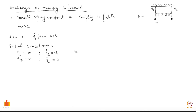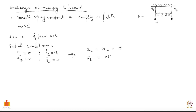This translates to the following for the normal coordinates. The same initial conditions, if you look for the normal coordinates, they translate to: capital Q1 equals capital Q2 equals 0 at t equal to 0, just because small q1 and small q2 are 0 and capital Q1 and capital Q2 are linear combinations. You can also immediately see that Q1 dot will be sqrt(mL²/2) times v0, and Q2 dot will also be sqrt(mL²/2) times v0.